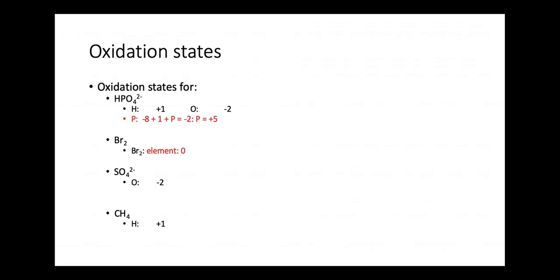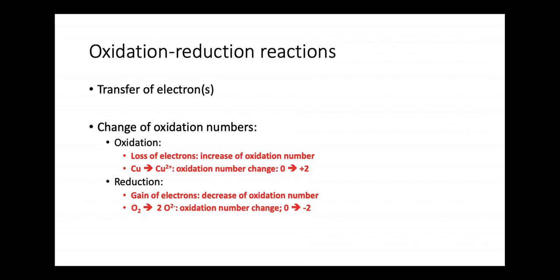For SO4²⁻: O is minus 2 times 4 equals minus 8, and the overall charge is minus 2, so S must have an oxidation number of plus 6. For CH4, it's a molecular compound so H is plus 1; 4 times plus 1 is plus 4. Overall it's neutral, so C must be minus 4.